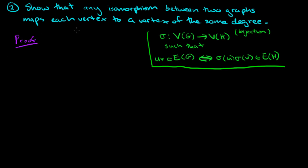We saw in a previous video an example where we had a vertex of degree 4 in one of the graphs and there was no vertex of degree 4 in the other graph, so we couldn't find an isomorphism. In this video, we're going to prove that this actually holds in general.